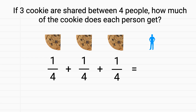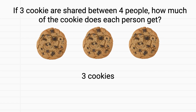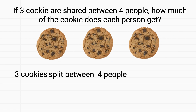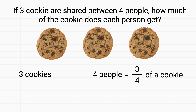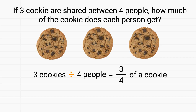Each person receives three-fourths of a cookie. To recap, we had three cookies that we split between four people, and each person received three-fourths of a cookie. Remember that when we split something up, we can represent that with division. So three cookies divided by four people is three-fourths of a cookie each.